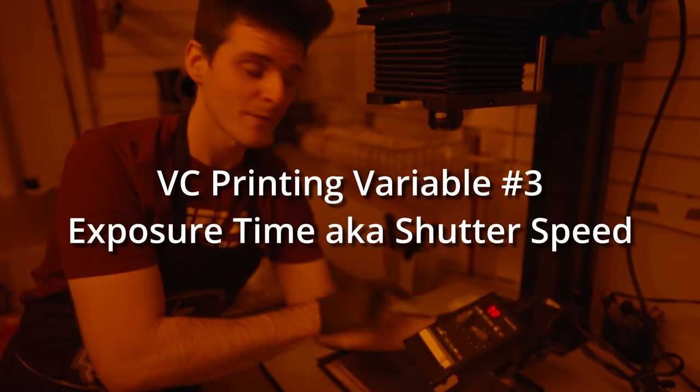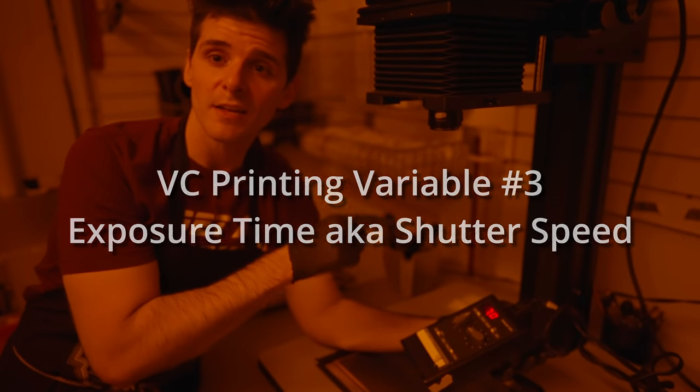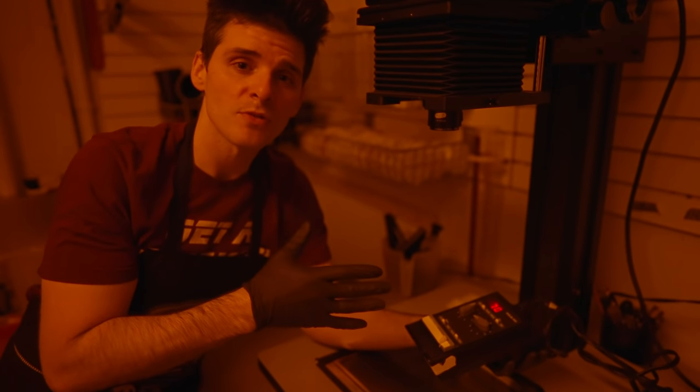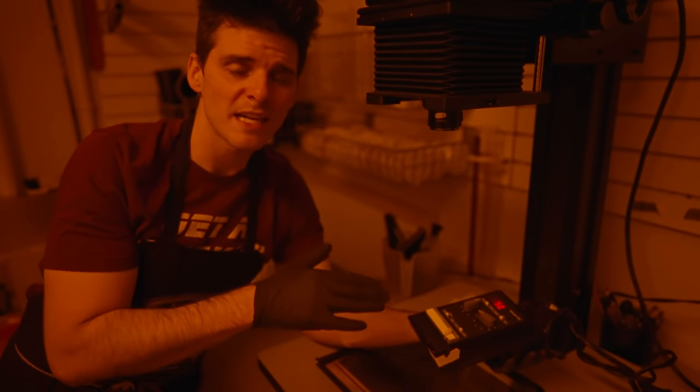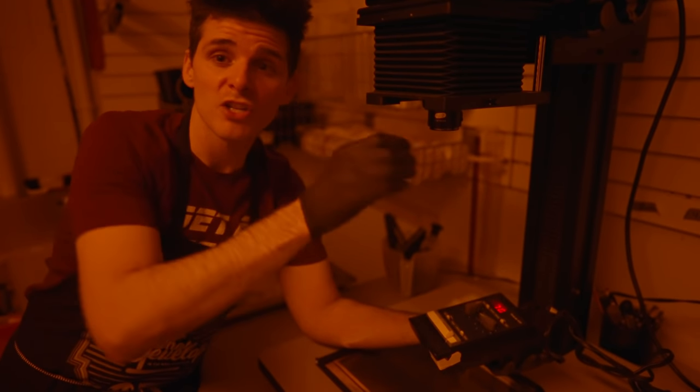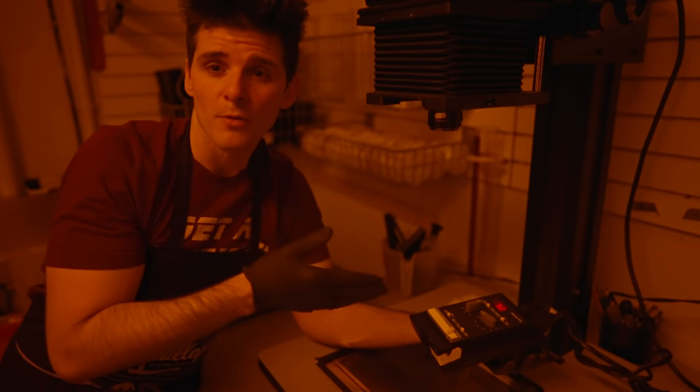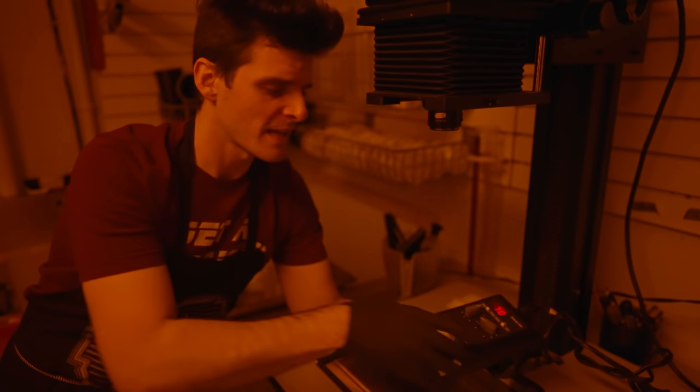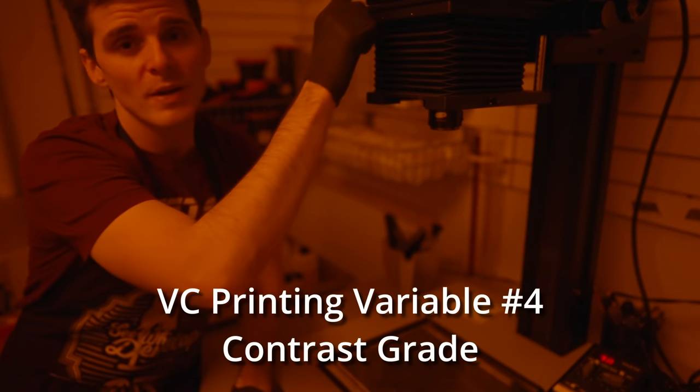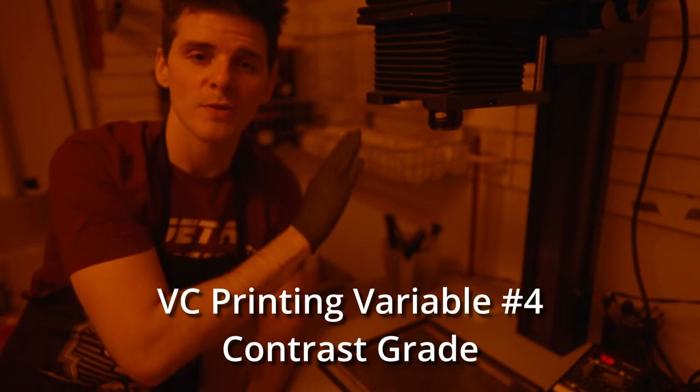So we have f-stop, we have height of our enlarger, and then some other factors for exposure we'll need are our time. For this one, I have a Graylab 450 timer. This one allows me to dial in seconds, tens of seconds, and tenths of seconds. Most exposures I'm going to do, I'm going to try to keep below 10 to 12 seconds. If it's way too fast, I'm not going to have time to do things like dodge and burn, but it will really help in the long run to have good consistent control. The timer's optional, but it really helps.